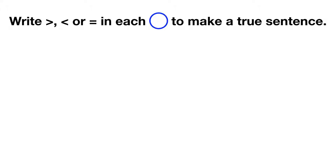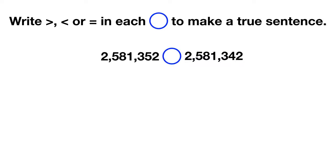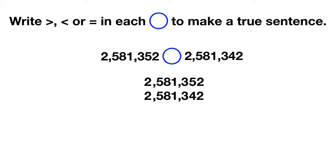Now it's time for you to practice on your own. Write a greater than, less than, or equal symbol in the circle to make a true sentence. The first thing you have to do is write out your numbers — your first number, and then your second number right below it so the ones places are lined up. Now we start by comparing the largest place values. Here we have a 2 and a 2 — they're the same, cross them out. Next is the 5 and the 5 — again they're the same. After that the 8 and the 8 are the same, the 1 and the 1 are the same, the 3 and the 3 are the same, and then we get to the 5 and the 4 — these are different. We can tell that 5 is bigger than 4, so the first number is bigger than the second number.